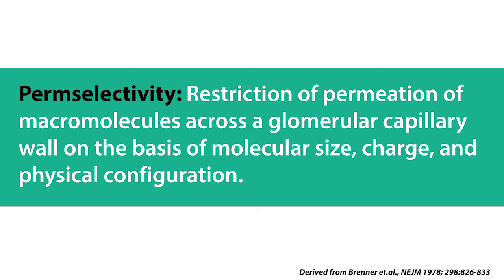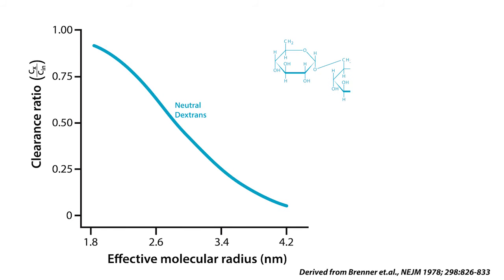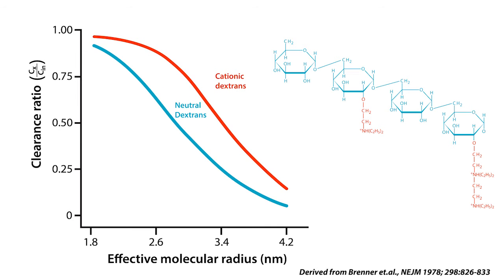Dextran molecules of different molecular sizes were compared to the clearance of inulin. The size of dextran was increased by adding dextran monomers to the growing polysaccharide chain. Results show that as the effective molecular radius of the neutral dextran increases, perm selectivity declines, confirming that the filtration barrier discriminates based on size. When cationic or positive residues were added to the dextran monomers,